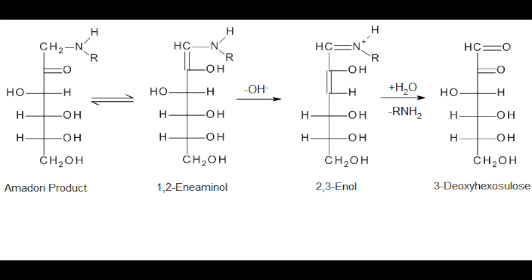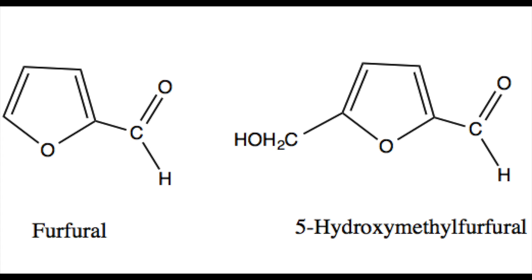The open chain Amadori compound can undergo further dehydration, producing the 2,3-enol. This then undergoes deamination, producing the dicarbonyl intermediate. The intermediates are then degraded into the compounds which provide some of the aroma, flavour, and colour for the bread.